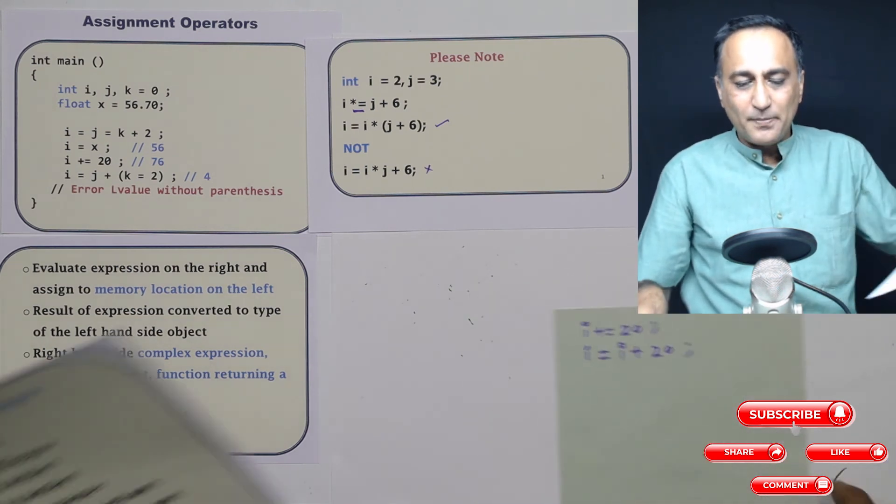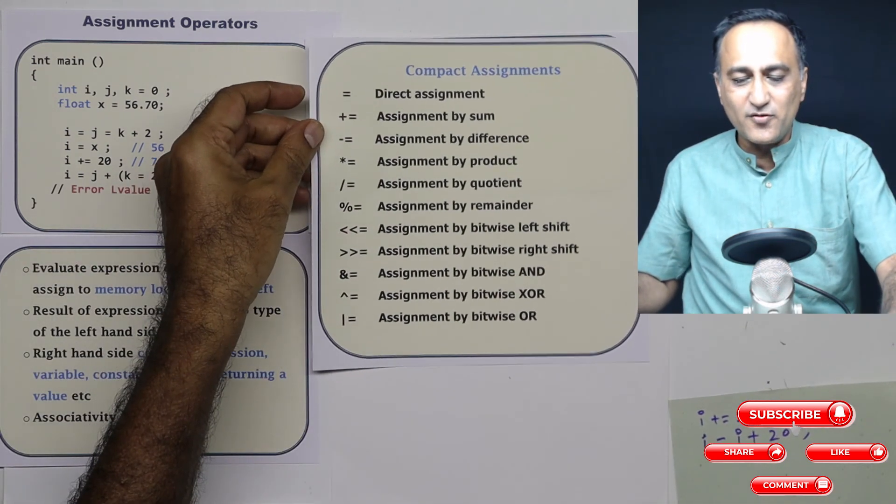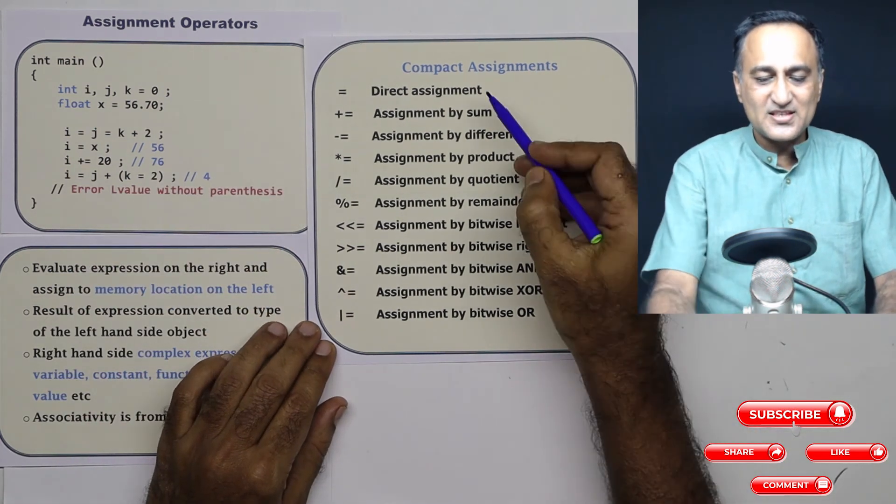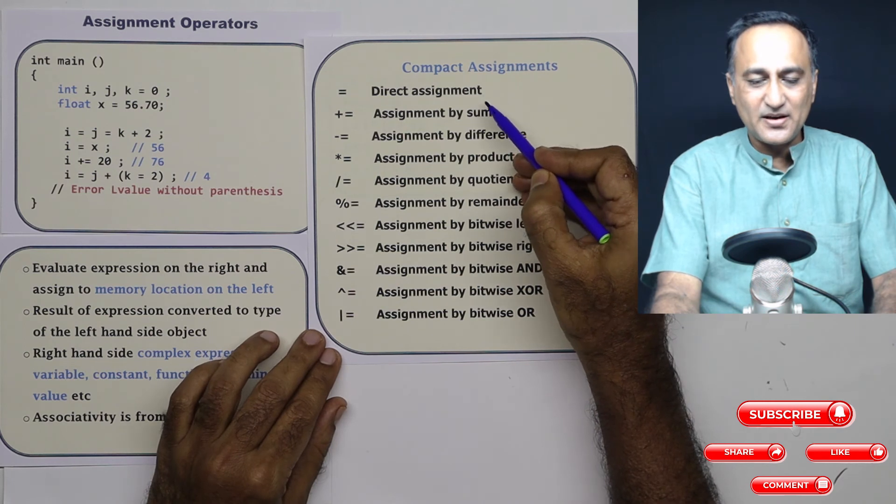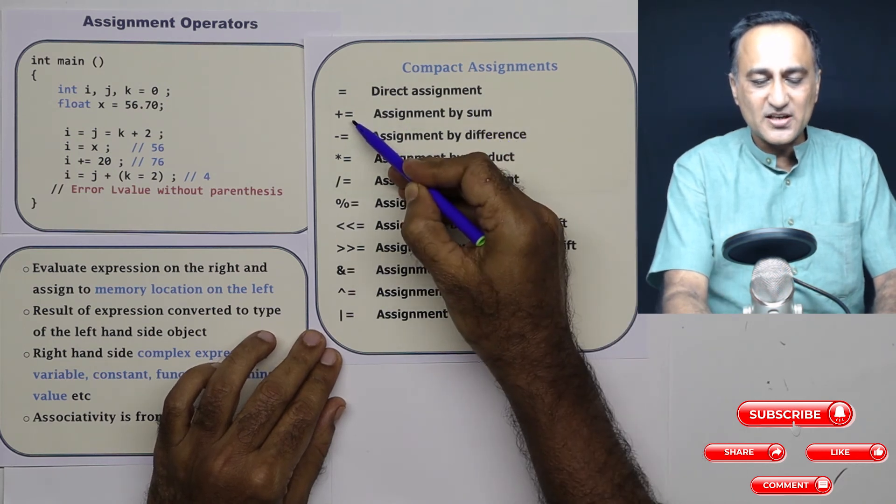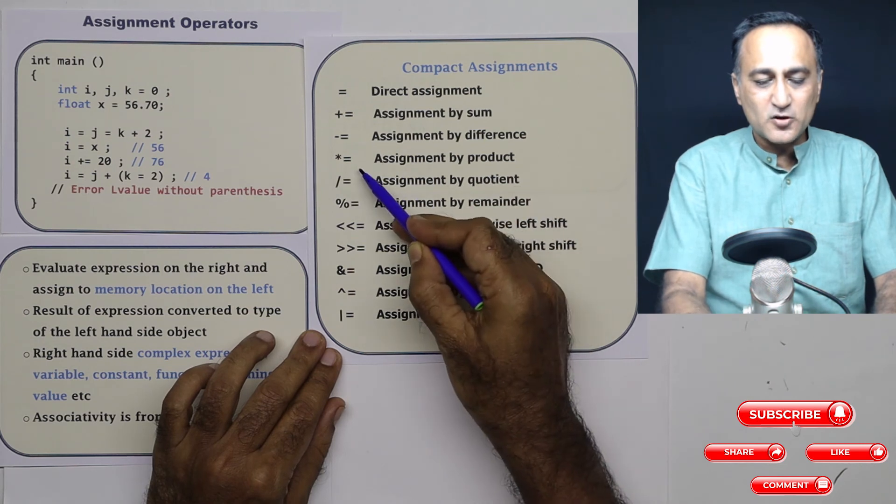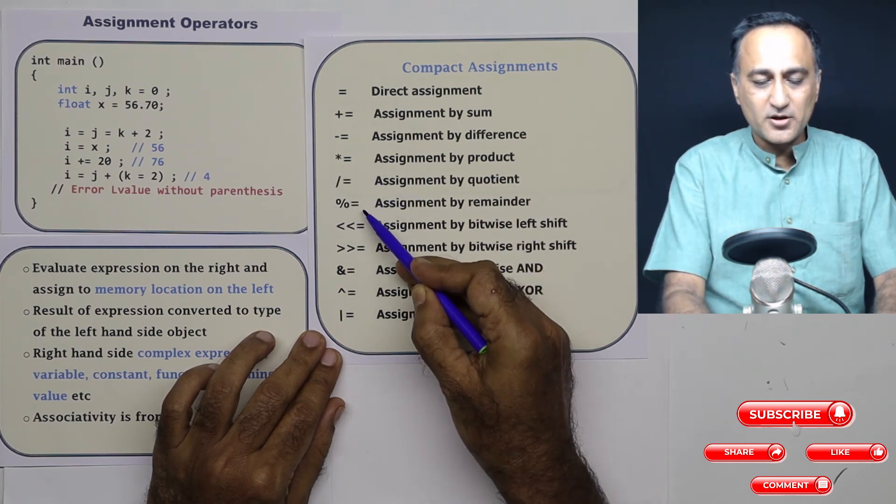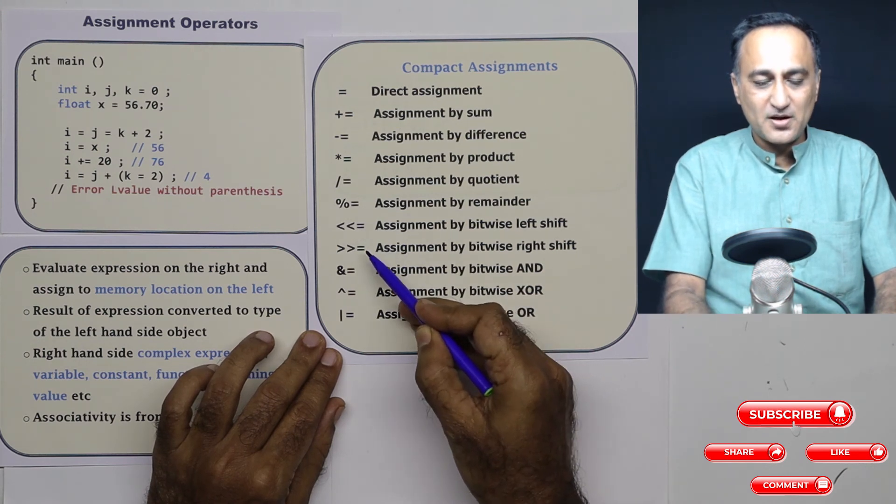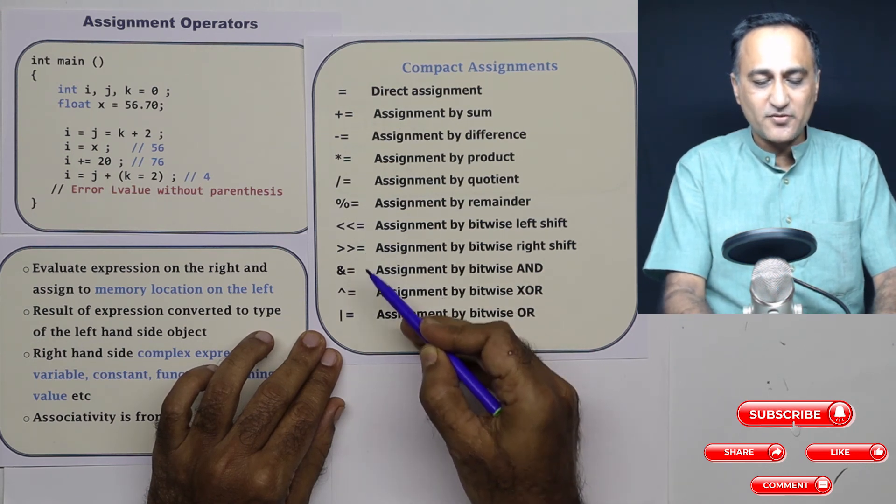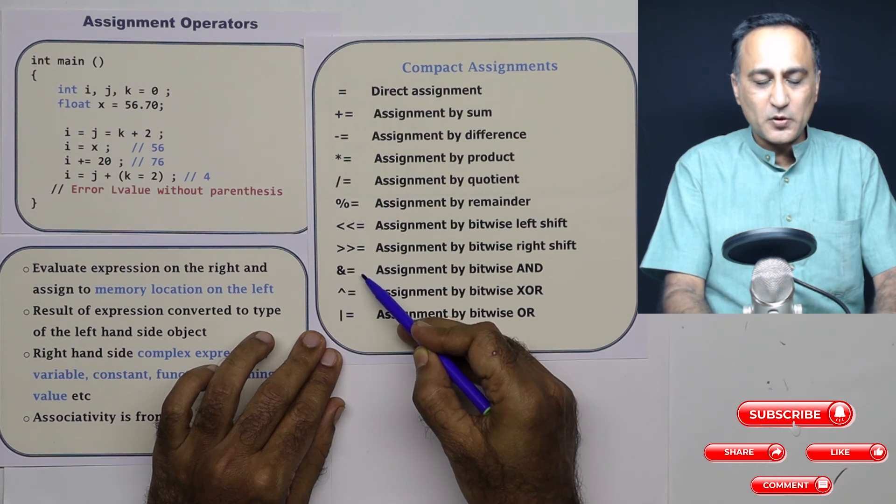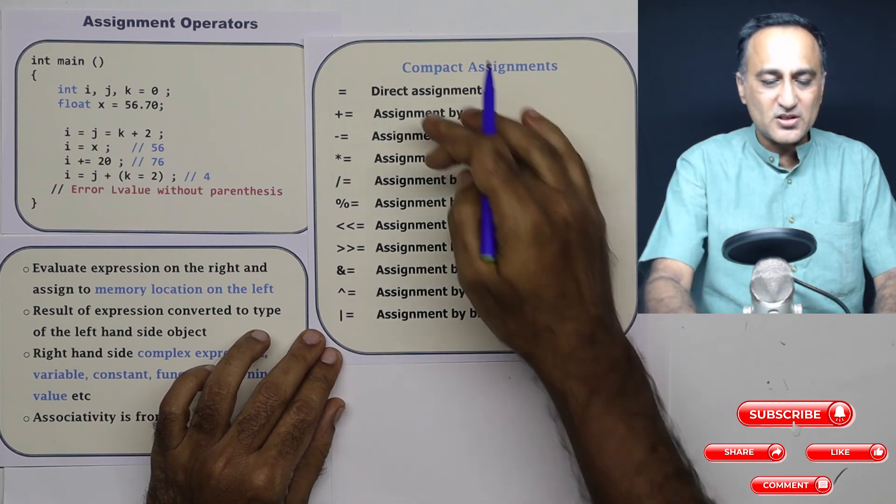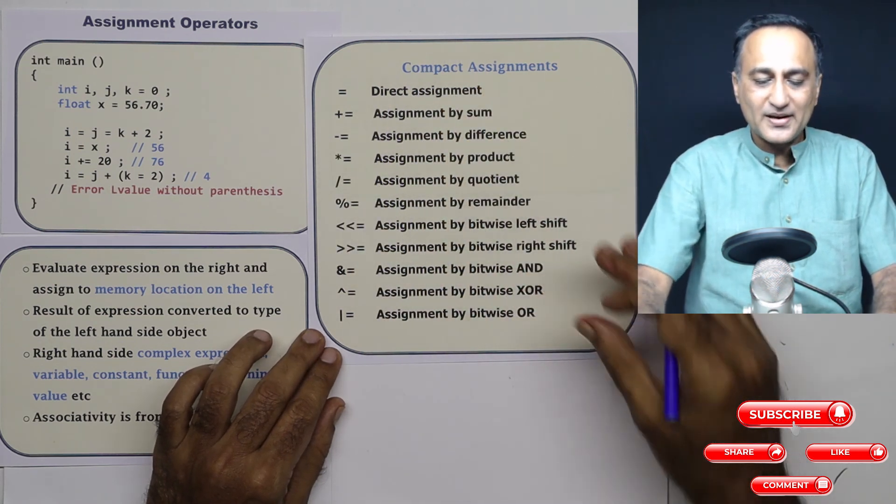Now there are other compact assignments. I'll give you a chance to glance. Once the notes are there, these will all be accessible to you. This is shortcut direct assignment, shortcut addition assignment, shortcut subtraction assignment, shortcut multiplication, shortcut division assignment, shortcut modulus assignment, shortcut shift assignment, shortcut bitwise AND, bitwise exclusive OR, and bitwise OR.